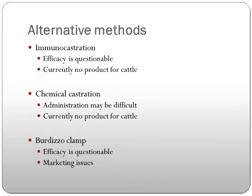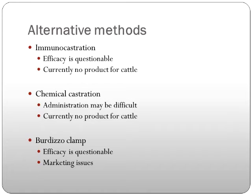There are some alternative methods as well. Immunocastration's efficacy is questionable and there's really no approved product for cattle. Chemical castration is being looked at as an option, though administration may be difficult. The Burdizzo clamp — a large clamp used to crush the spermatic cords — works if done correctly. However, I've seen cattle arrive at the feedlot looking exactly like bulls but that were Burdizzo-clamped; because the testicles hadn't atrophied yet, we castrated them not knowing. There are likely marketing issues with the Burdizzo for that reason.